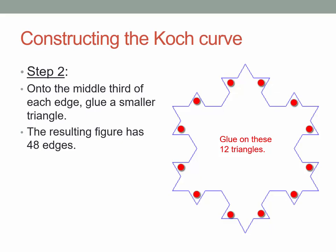Step two. We now have 12 edges, and onto the middle third of each of those edges, we now glue an even smaller triangle. The dots in the picture are just to show where I'm putting on those new triangles. I've put on 12 new triangles. What I've done is taken the existing 12 edges and replaced them by shorter edges, and multiplying by four, we now have 48 edges.